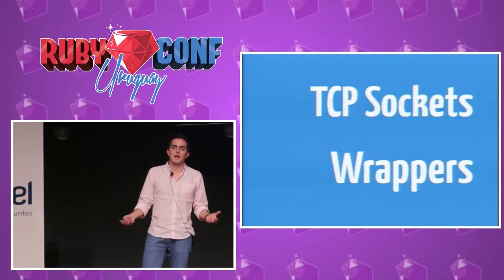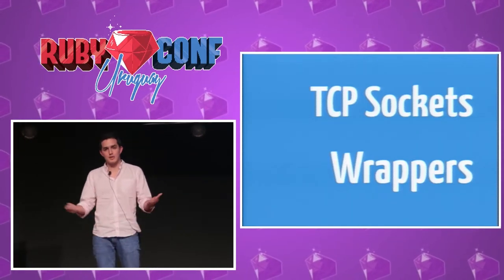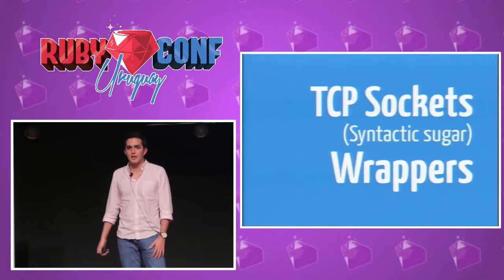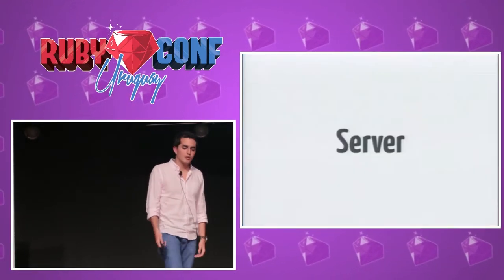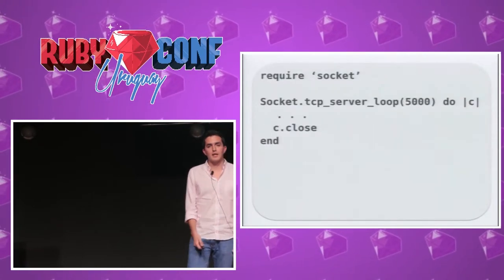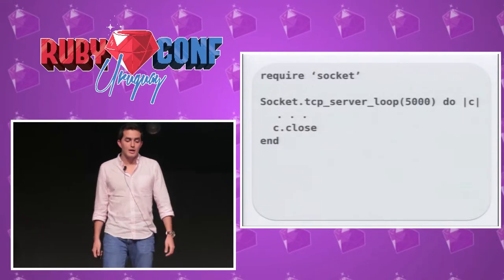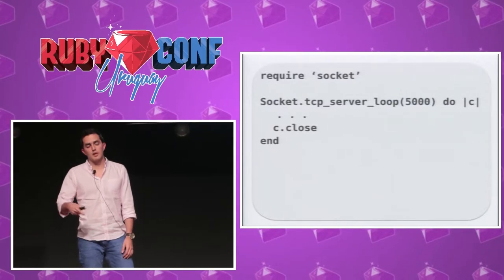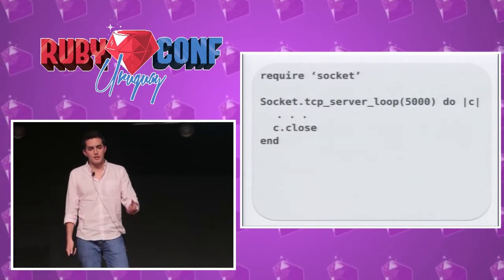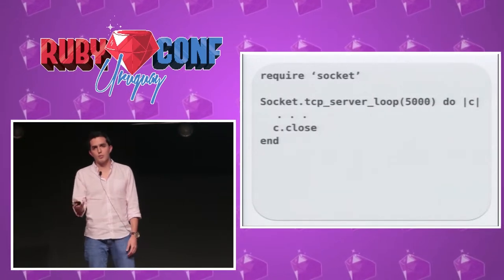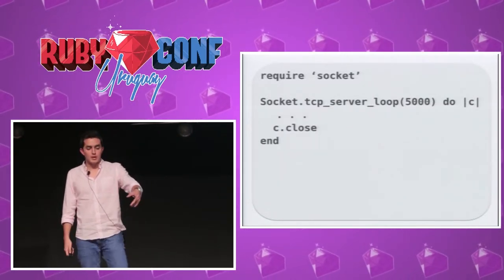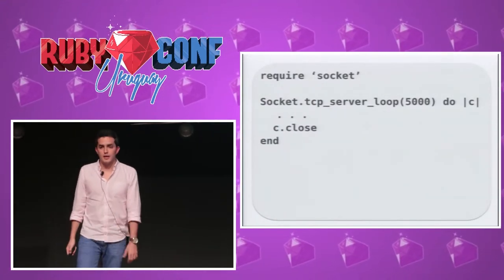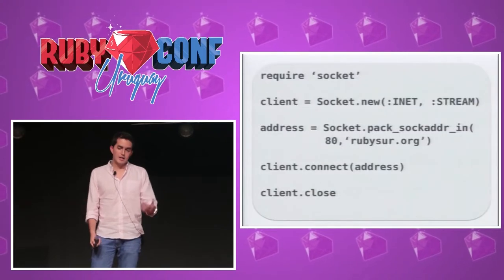Ruby has abstractions that enable us to do things more easily — that's why we love Ruby. It has syntactic sugar around it. Let's see what happens with the server. Here we have TCPServer — a loop where, if we want a host it's optional, and then the port. You receive a block where you can access a connection. It's important to know that the block doesn't close the connection when completed — you always have to close it.